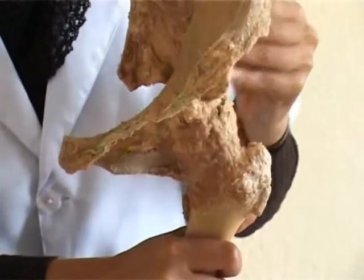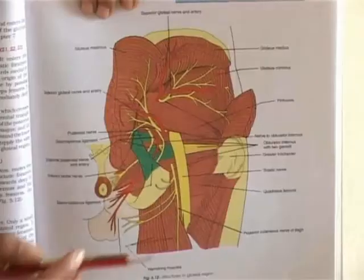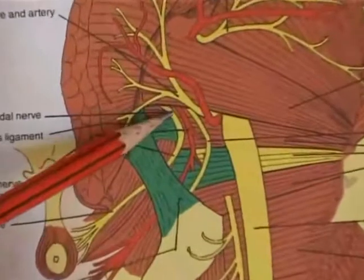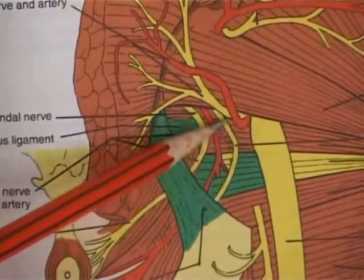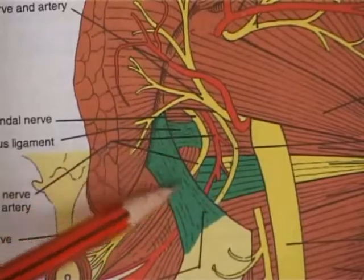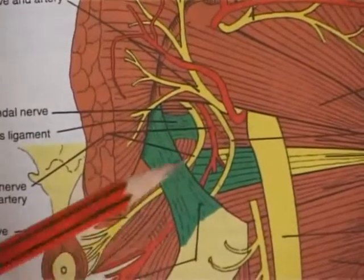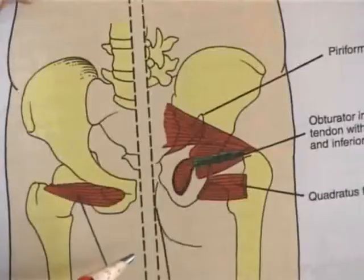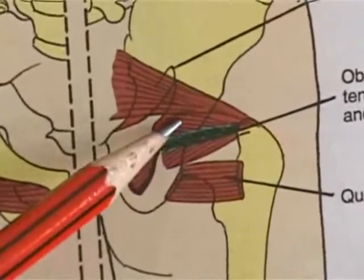The pelvic surface of the pubis is related to the urinary bladder and also to the ductus deferens or the round ligament of the uterus. The ischial spine gives attachment to the sacrospinous ligament. Its dorsal surface is crossed by the pudendal nerve medially, the internal pudendal artery in between, and the nerve to obturator internus laterally. The sacrospinous and sacrotuberous ligaments form the greater sciatic foramen above and the lesser sciatic foramen below. The upper and lower margins of the lesser sciatic notch give origin to the superior gemellus and inferior gemellus.